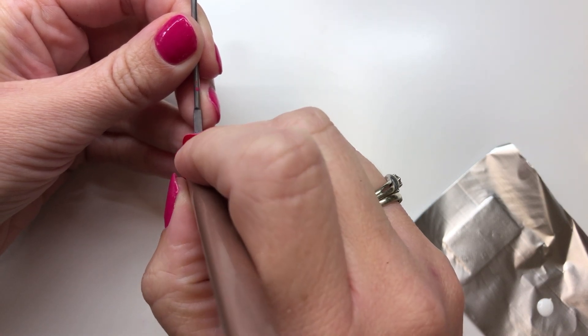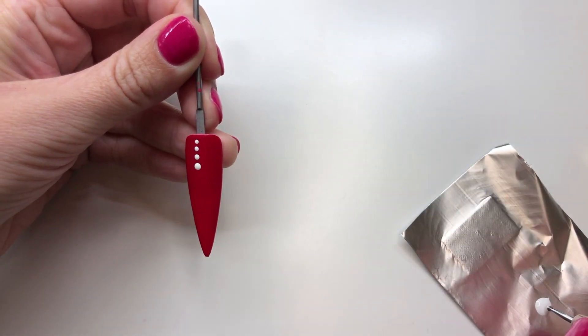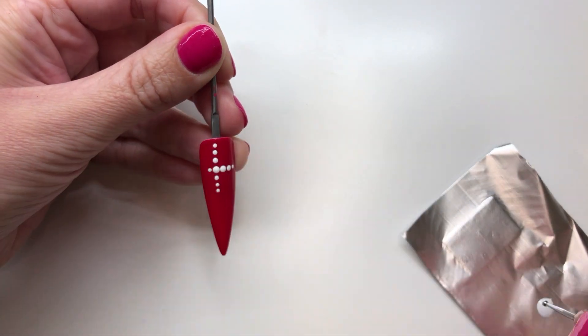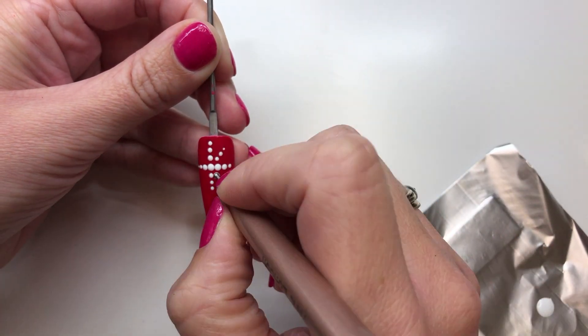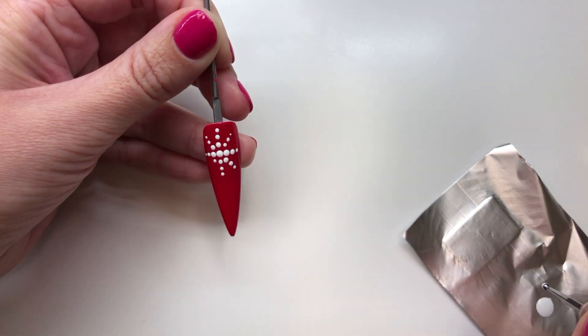Now with my dotting tool, I'm just putting dots of i156 into the snowflake shape that I want for my design.